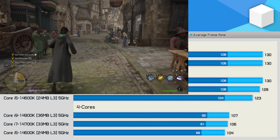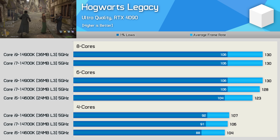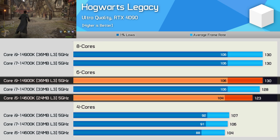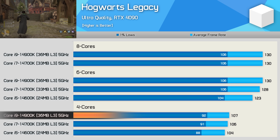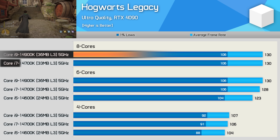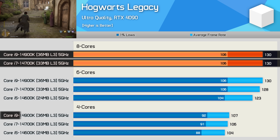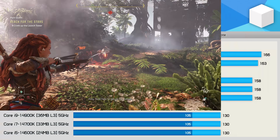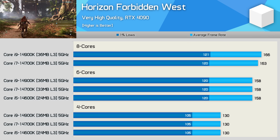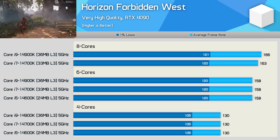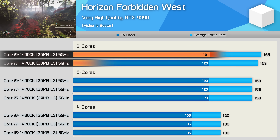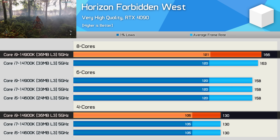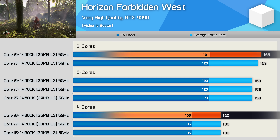Hogwarts Legacy sees no difference with eight core configurations, and only a minor 5% difference between the 14600K and 14900K with six cores active. The drop from eight to six cores is very small, with four cores reducing the frame rate by just under 20%. Horizon Forbidden West appears to be primarily frequency limited — cache capacity makes no difference regardless of core configuration. Dropping from eight to six cores only reduced performance by 5%, and eight to four saw a 22% drop.